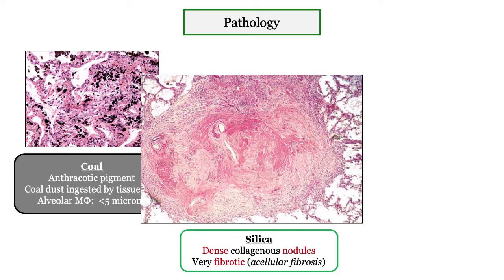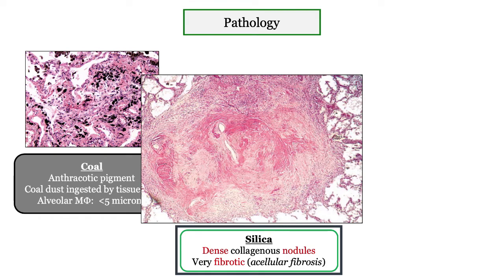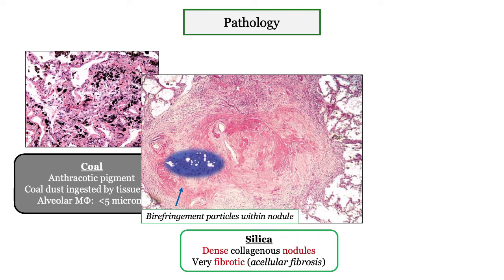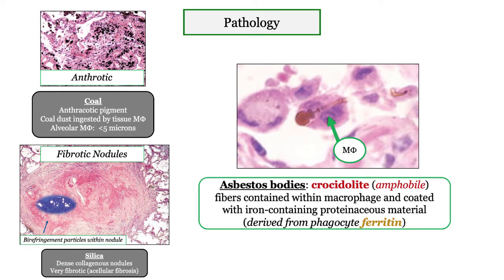Moving on to silica: the key pathologic descriptor is collagen, as in dense collagenous nodules. This is a very fibrotic disorder, and those fibrotic nodules may variably be described by acellular fibrosis. You may see the silica particles described as birefringent — not particularly important, but mentioned so you won't be thrown off.